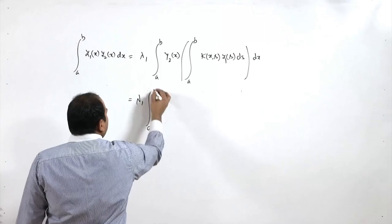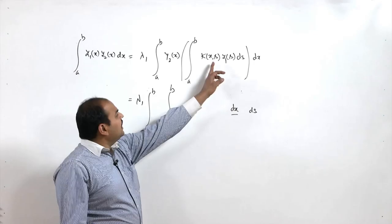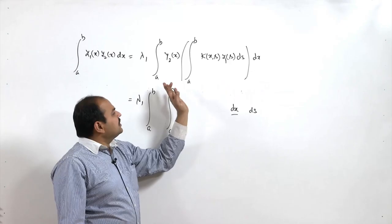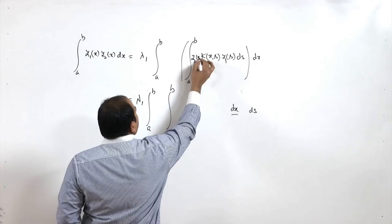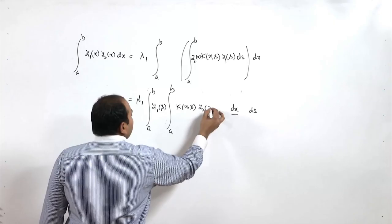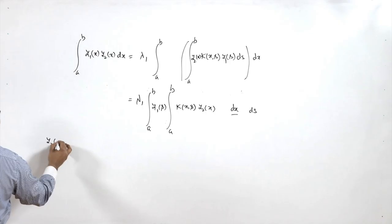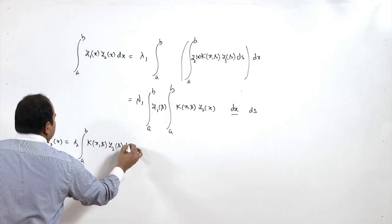After interchanging the order, we get λ₁ ∫[a to b] y₁(s) [∫[a to b] k(x,s) y₂(x) dx] ds. The inner integral is with respect to x. Now since we assumed a real symmetric kernel, k(x,s) = k(s,x), so we can use equation 7 (with variable relabeling) to substitute the inner integral.